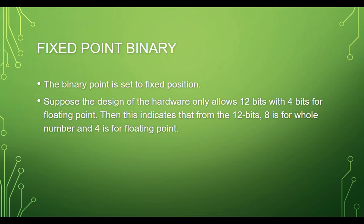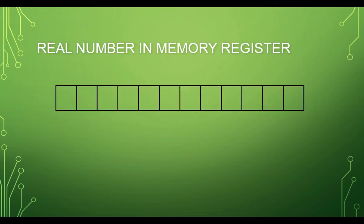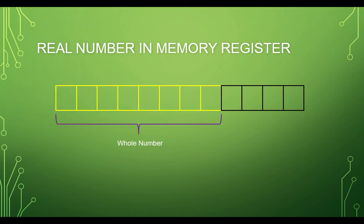Let's have some examples so we can clearly understand how to represent real numbers using fixed-point binary. Suppose we were given a 12-bit memory register where there are 8 bits for the whole number and 4 bits for the fraction part.